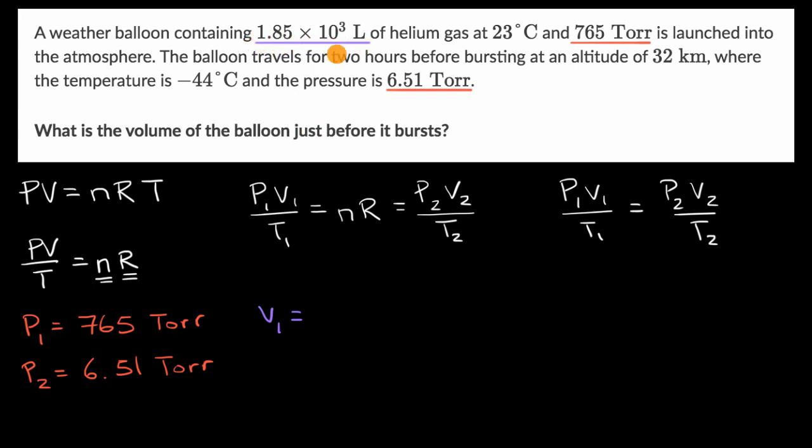Now what is V one? Well, they tell us that right over there. That is 1.85 times 10 to the third liters. Now what is V two? Well, that's what they want us to figure out. What is the volume of the balloon just before it bursts? So I'll put a little question mark there. And then last but not least, what is T one?